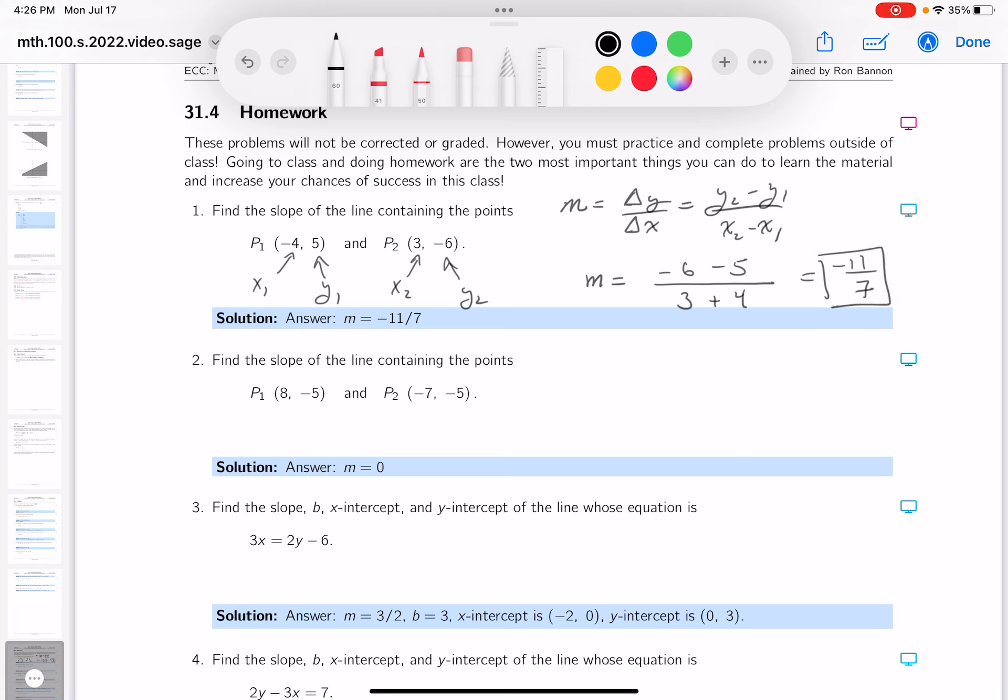That's the slope of the line containing those two points. I do recommend you look at the key. Make sure the key is saying that. Thank you.